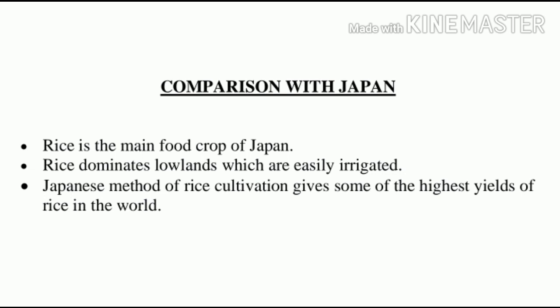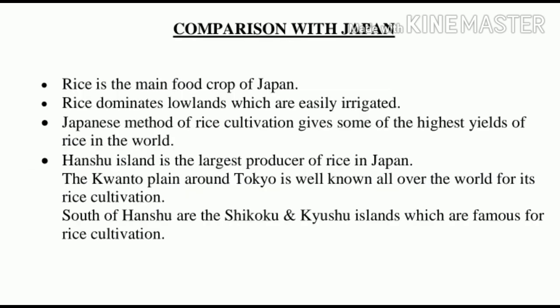Some mechanization of rice cultivation has taken place in Japan. Paddle wheels, electric and diesel pumps are used to supply irrigation ditches with water. Small tractors are used for preparing the fields. Terracing is a common feature of rice cultivation on the margins of the plains. Honshu Island is the largest producer of rice in Japan, where coastal areas are intensely cultivated. The Kanto Plain around Tokyo is well known all over the world for its rice cultivation.